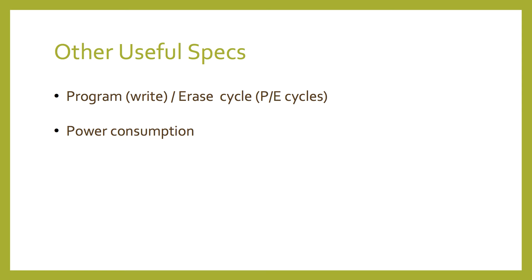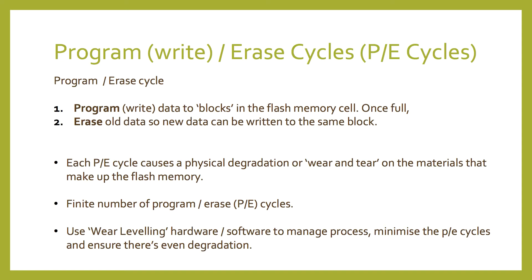Now let's look at some specs that aren't on the SD card and are a bit harder to find. We're interested in two things. First is the program-erase cycle, or PE cycle — how many times the SD card can have data written and erased before it becomes unusable. Memory cards write data to blocks in the flash memory cell. Once these blocks are full, old data must be erased so new data can be written to the same block. Each PE cycle causes physical degradation or wear and tear on the flash memory. Memory cards use a hardware or software layer called wear leveling to manage where data is written and erased, to minimize PE cycles and ensure physical degradation happens evenly across the card.